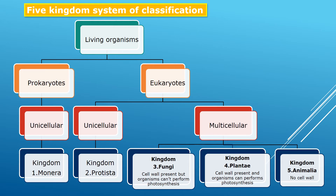Kingdom Monera is a unicellular prokaryotic living organism. In eukaryotes there are two types: unicellular and multicellular. Kingdom Protista is a unicellular eukaryotic living organism. Among multicellular eukaryotic organisms, we have kingdom Fungi, kingdom Plantae, and kingdom Animalia. In kingdom Fungi, a cell wall is present, but they do not perform photosynthesis because fungi are dependent on other organisms for food.